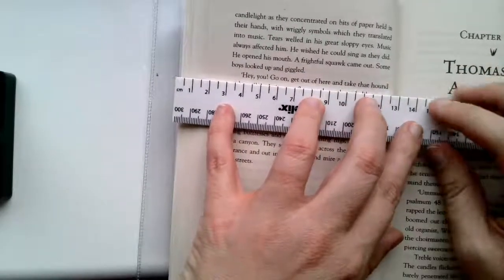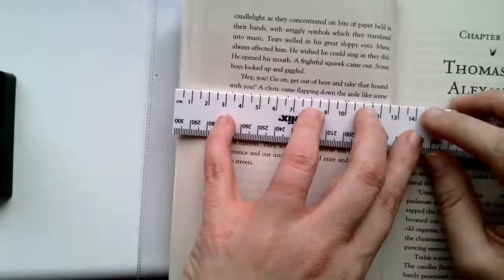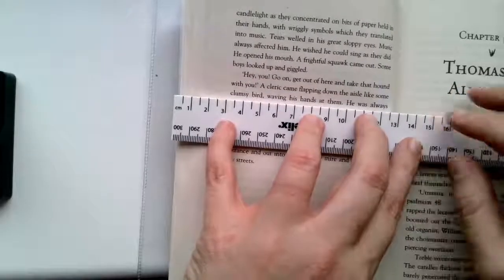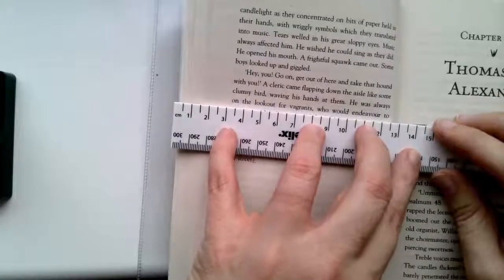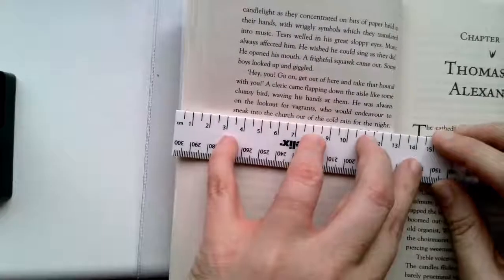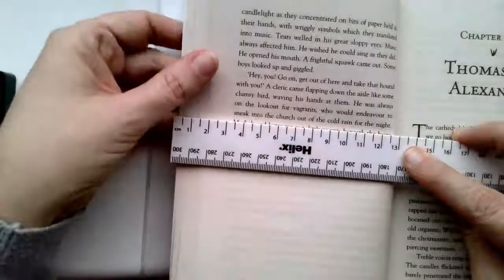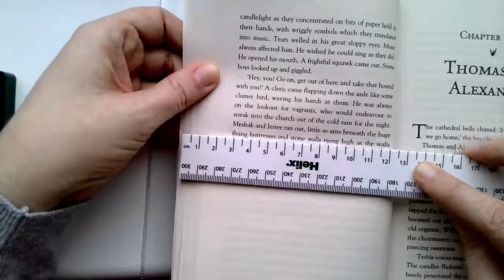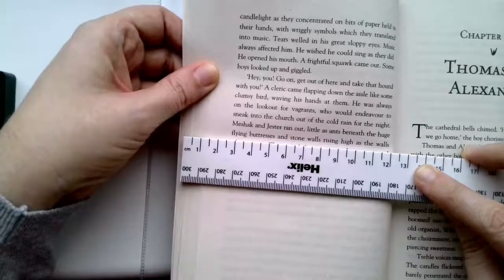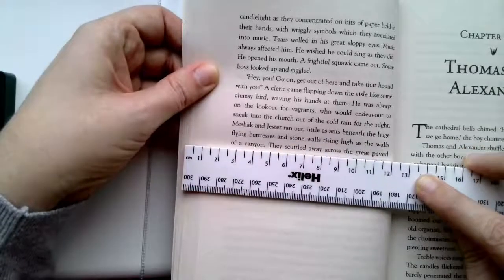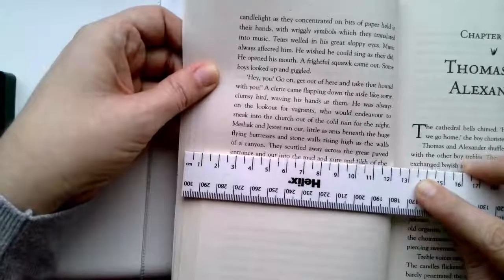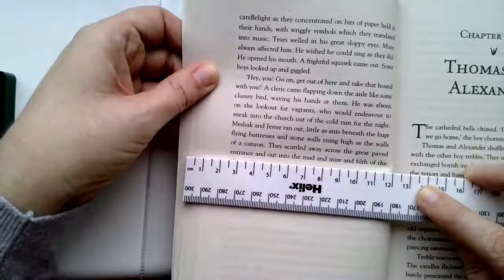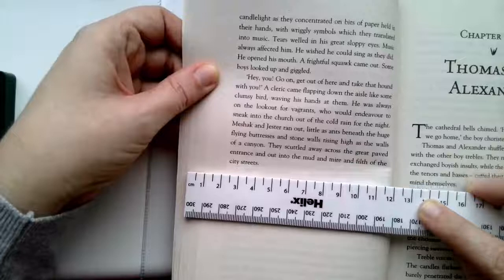Hey you, get on out of here and take that hound with you. A cleric came flapping down the aisle like some clumsy bird, waving his hands at them. He was always on the lookout for vagrants, who would endeavor to sneak into the church out of the cold rain for the night. Meshach and Jester ran out, little as ants beneath the huge flying buttresses and stone walls, rising high as the walls of a canyon. They scuttled away across the great paved entrance and out into the mud and mire and filth of the city streets.